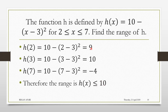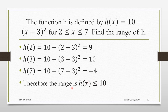This is 9, which is less than 10. This is 10, which is equal to 10. This is negative 4, which is less than 10. For example, if you put 5 in: 5 minus 3 gives 2, and 2 squared is 4; then 10 minus 4 gives 6. Clearly, all the numbers will be less than or equal to 10. So you can do this practice on your own — write all the elements in the domain and input them into the function, and you will realize the biggest number is 10. Hence, the range can be stated this way.